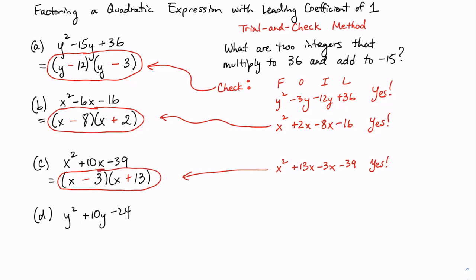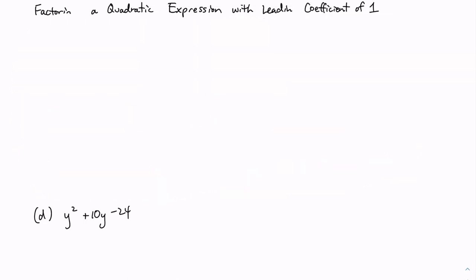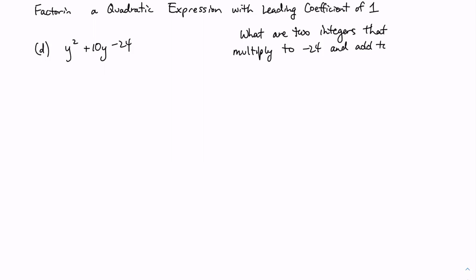Last example here. Let's make some more room. This was our example D. So with the leading coefficient of 1, there is an underlying question. What are two integers that multiply to negative 24 and add to positive 10?